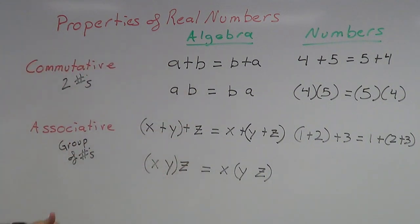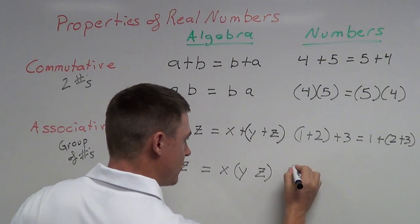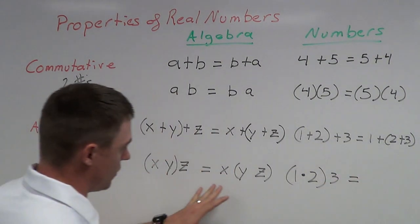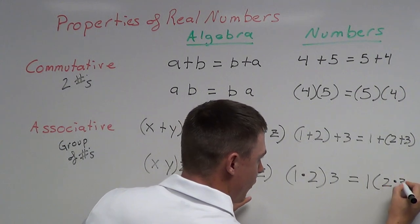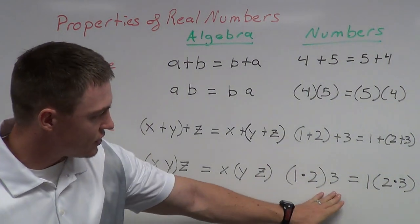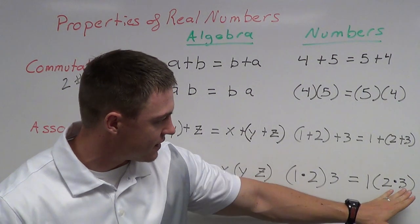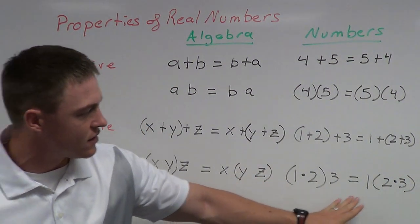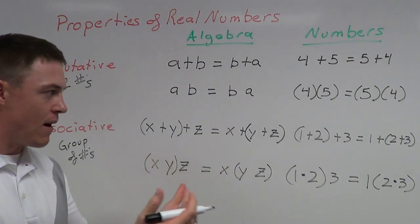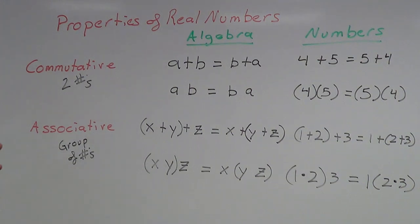Let's do this with numbers using 1, 2, and 3 again. (1 · 2) · 3: one times two is two, and two times three is six. On the other side, 1 · (2 · 3): two times three is six, and six times one is six. The left side is six, the right side is six. The associative property holds true — it doesn't matter what order I multiply, I always get six with the numbers one, two, and three.